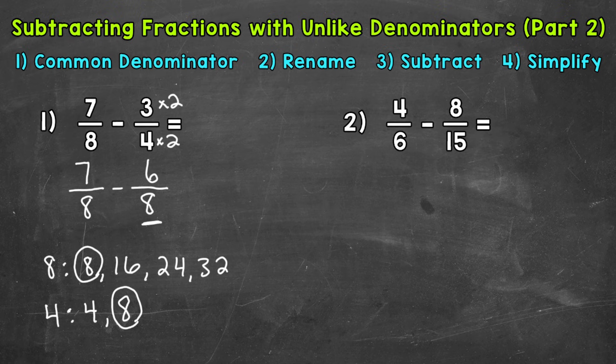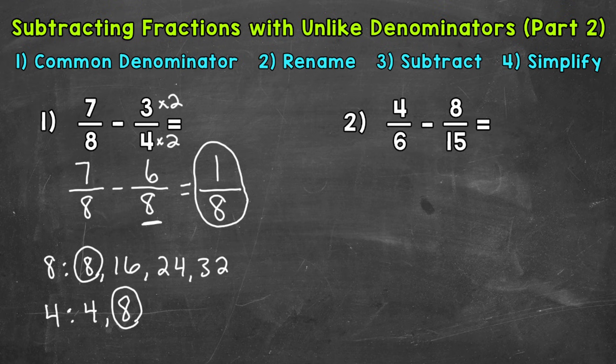When we subtract fractions, we subtract the numerators. So 7 minus 6 gives us a numerator of 1 in our answer. And we keep our denominator the same. We keep it 8. So our final answer is 1/8. Now we always look to see if we can simplify our answers, but 1/8 is in simplest form. The only common factor between 1 and 8 is 1. So it is again in simplest form. And we are done. So the answer to number 1 is 1/8.